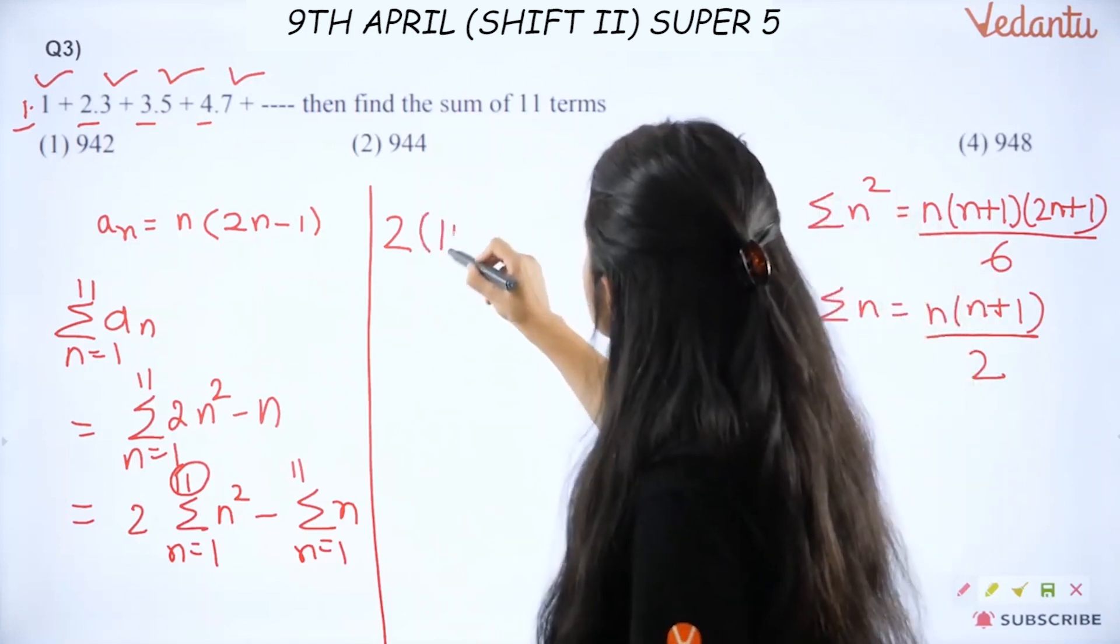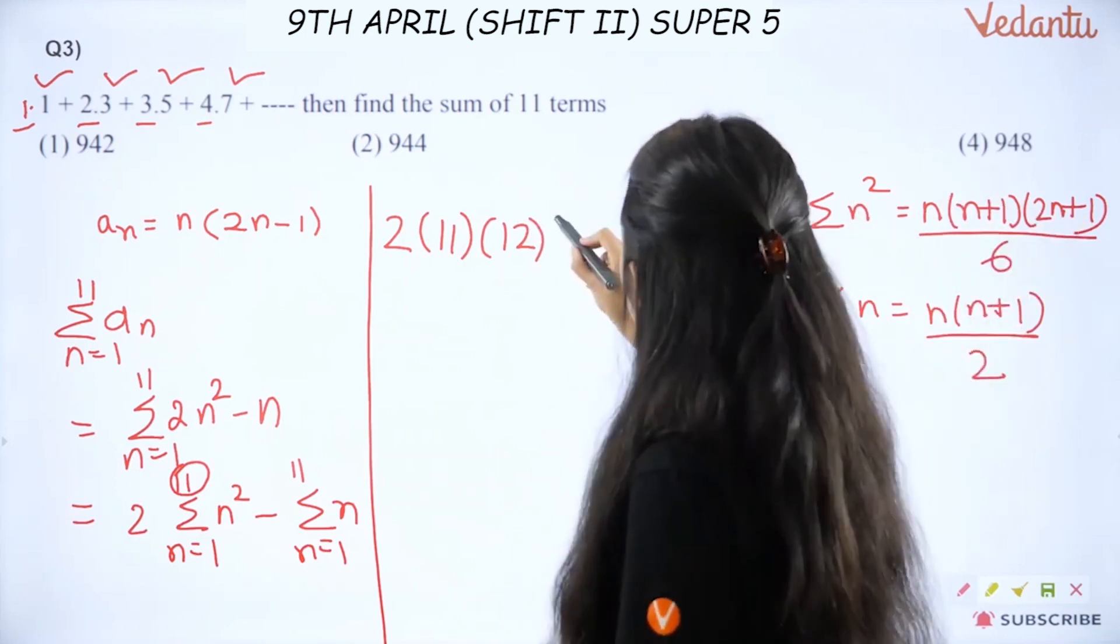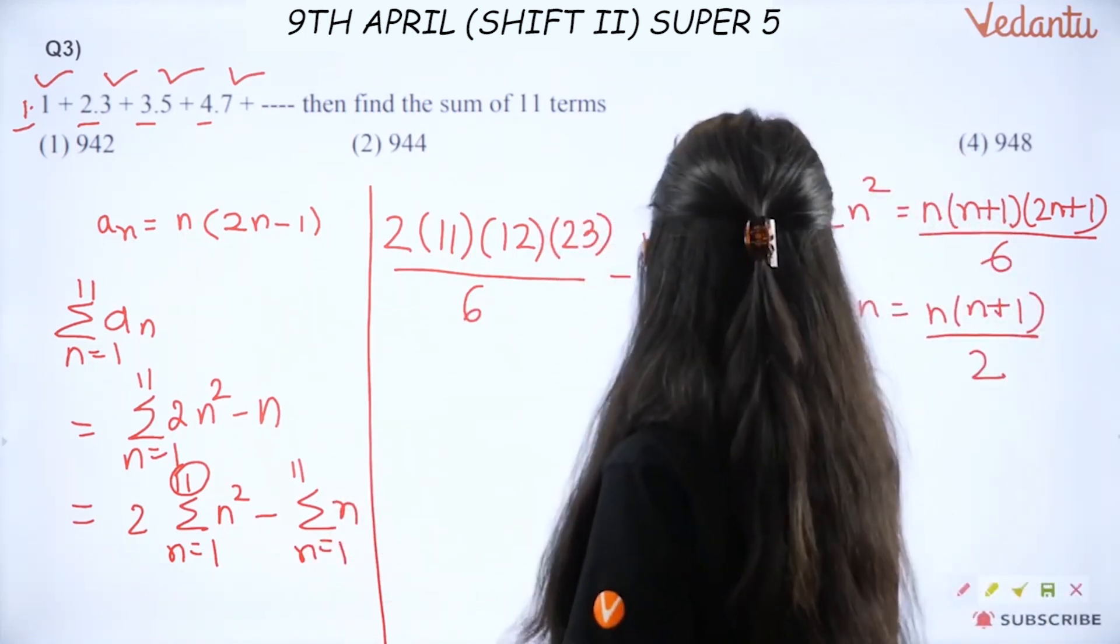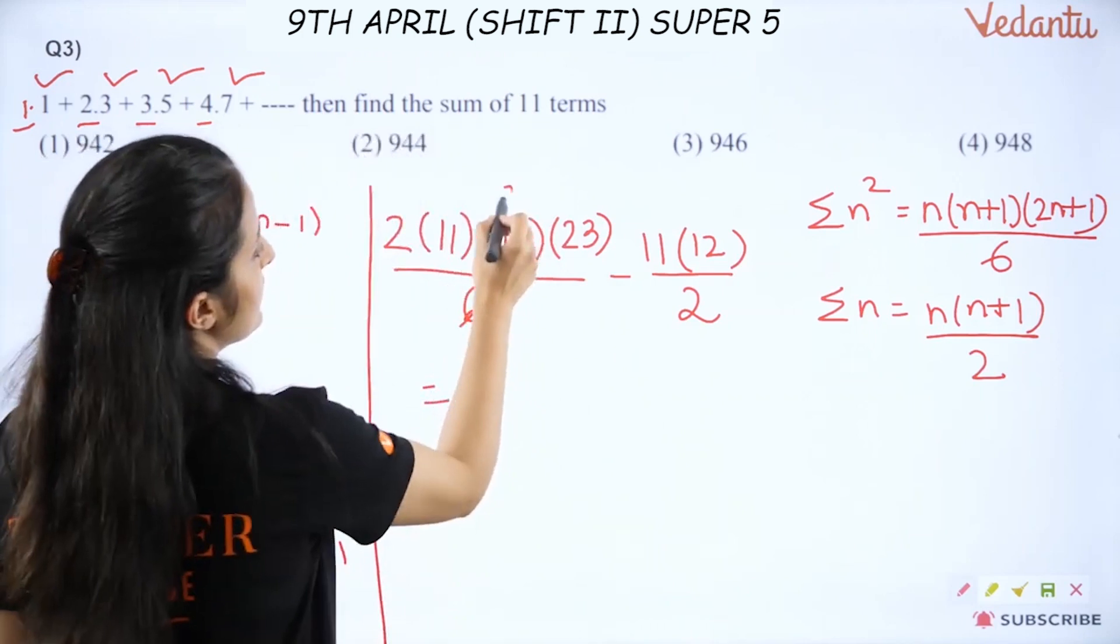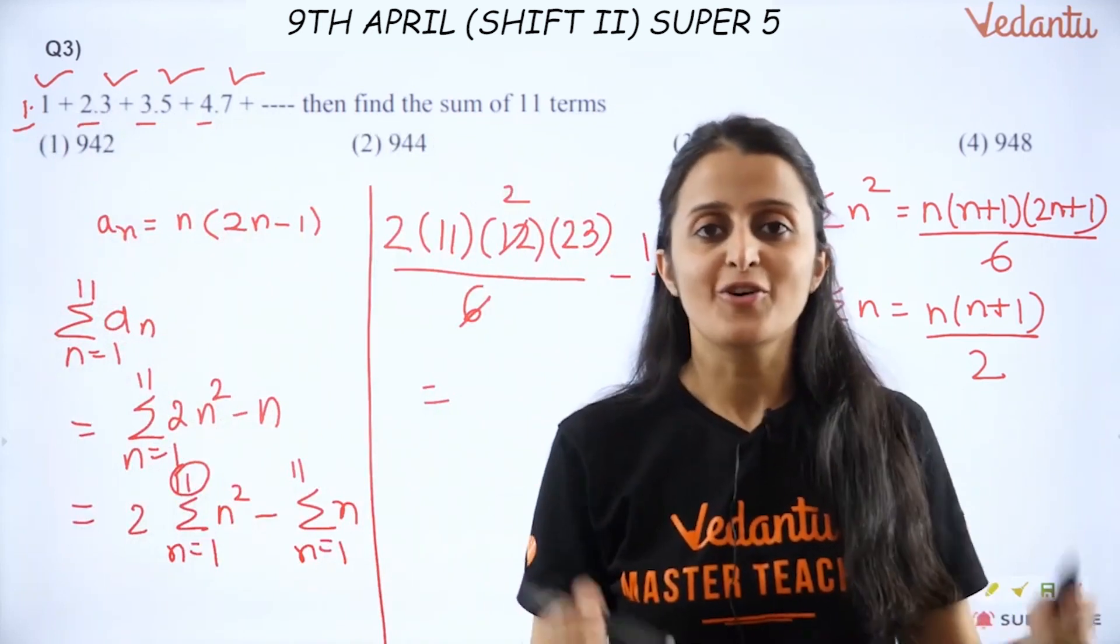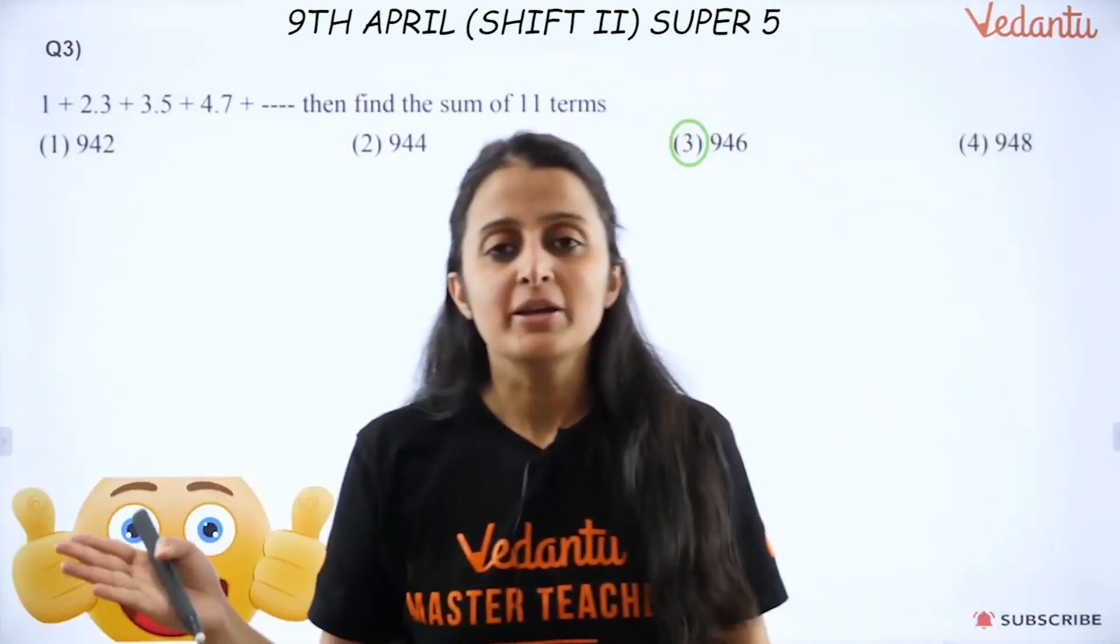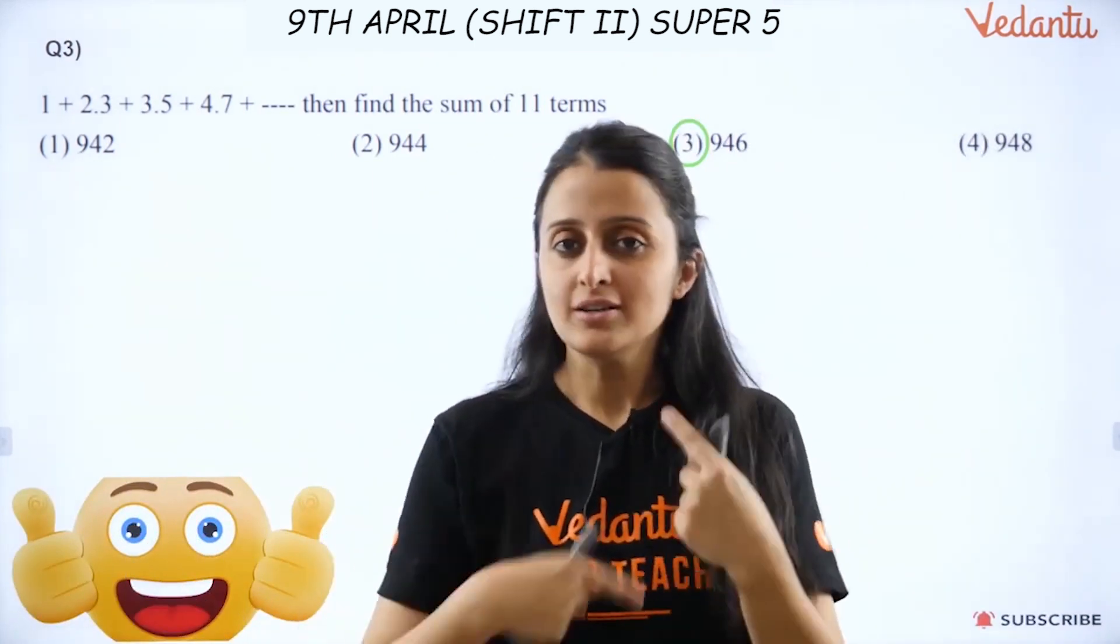Just apply this logic. Here in place of n, I have been given eleven terms. So n in place is eleven. So this will be 2 × [11 × 12 × 23]/6 minus [11 × 12]/2. Now simplify this. There's nothing much here. Find out and tell me what is the answer. Of course you will get 946 as the required answer. So whoever got 946 as answer, well done. Let's move to the next question.